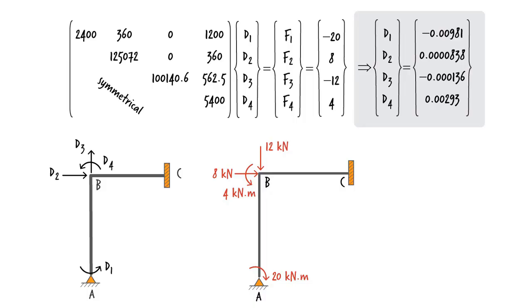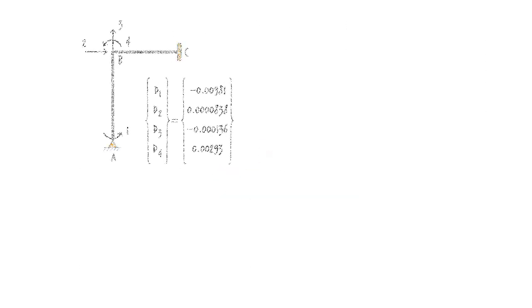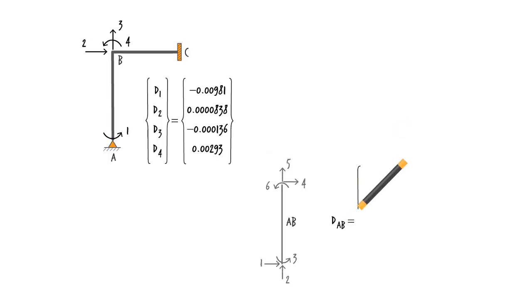Let's use the computed displacements to write the displacement vector for each member. For member AB, we get the displacement values. And for BC, we have the corresponding displacements.